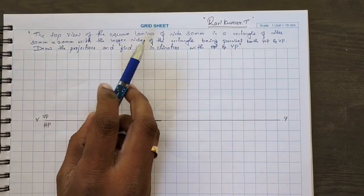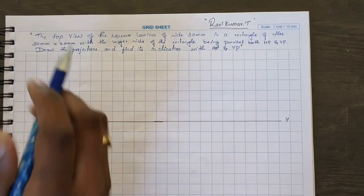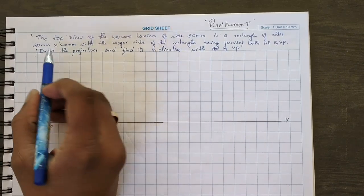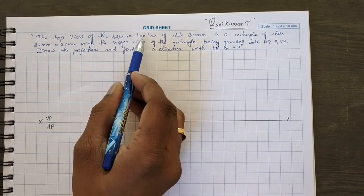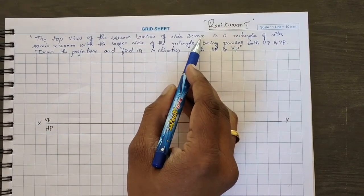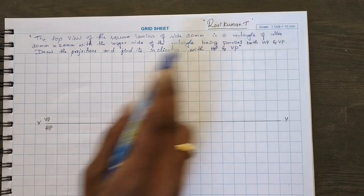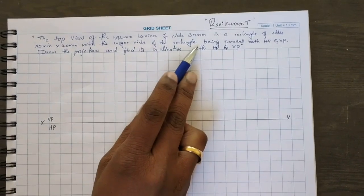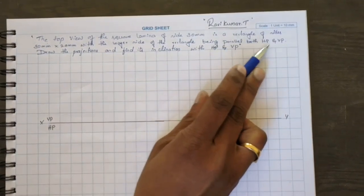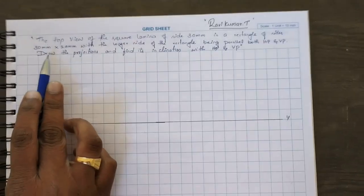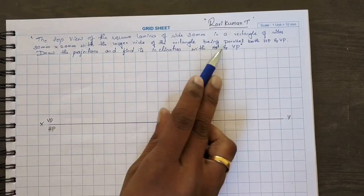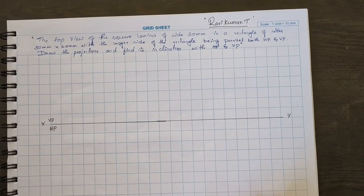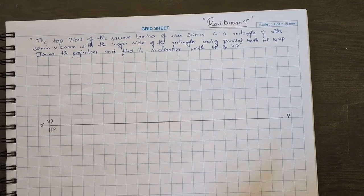Okay, square and rectangle lamina. See here, you have to understand the problem very carefully. The top view of a square lamina of side 30 mm is a rectangle of side 30 by 20 mm, with the longer side of the rectangle being parallel to both HP and VP. Draw the projection and find the inclination with HP and VP. See here, they are not given the inclination angle, but you have to find it out.